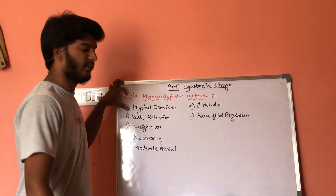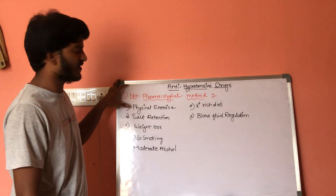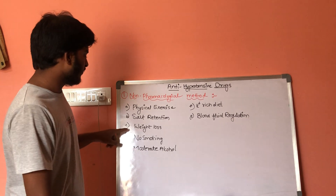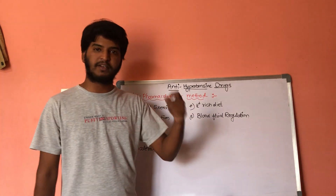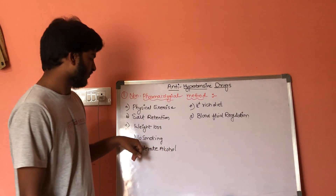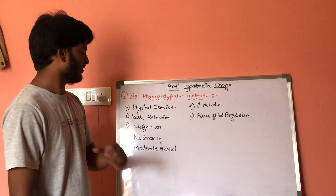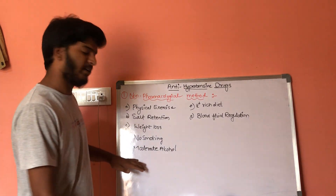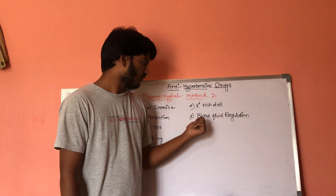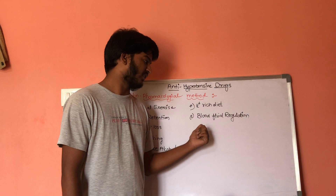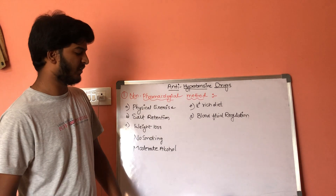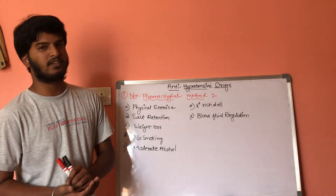To summarize the non-pharmacological methods: first, there should be physical exercise; second, salt intake should be decreased; third, weight loss if a person is suffering from obesity; fourth, if a person is a smoker, smoking should be decreased; fifth, if a person is alcoholic, there should be intake of moderate alcohol; sixth, there should be a potassium-rich diet; and seventh, there should be regulation of blood fluids.